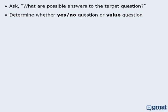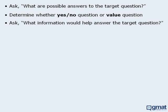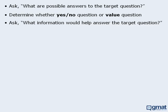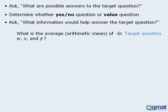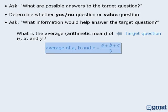Another strategy to consider when tackling data sufficiency questions is to ask: what information would help answer the target question? By considering information that would help answer the target question, you may gain some insight into what statements would be sufficient. For example, this target question asks: what is the average, or arithmetic mean, of the numbers w, x, and y? Since the average of three numbers is found by adding the three numbers and dividing by three, it would be useful to know the sum of w, x, and y. If we knew the sum, we could divide by three to find the average. If we spot that same useful information in one of the statements, we will know that the statement must be sufficient.